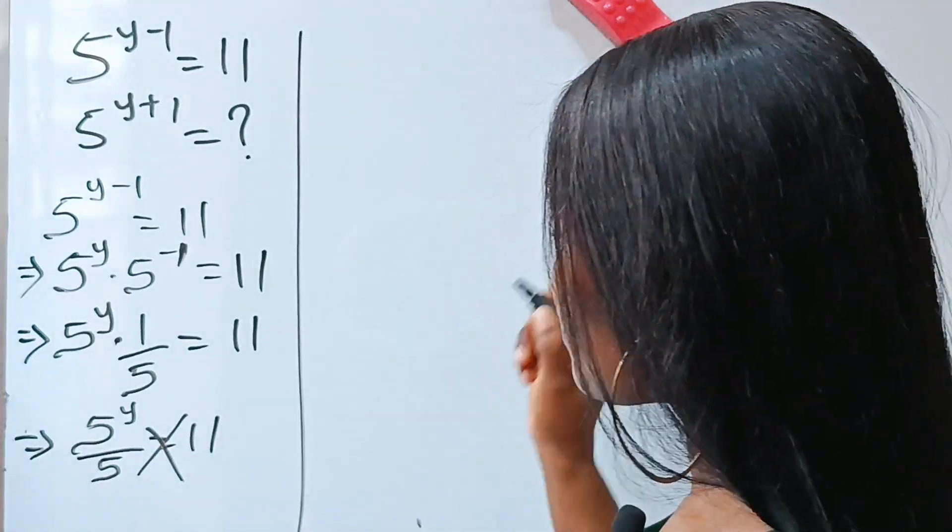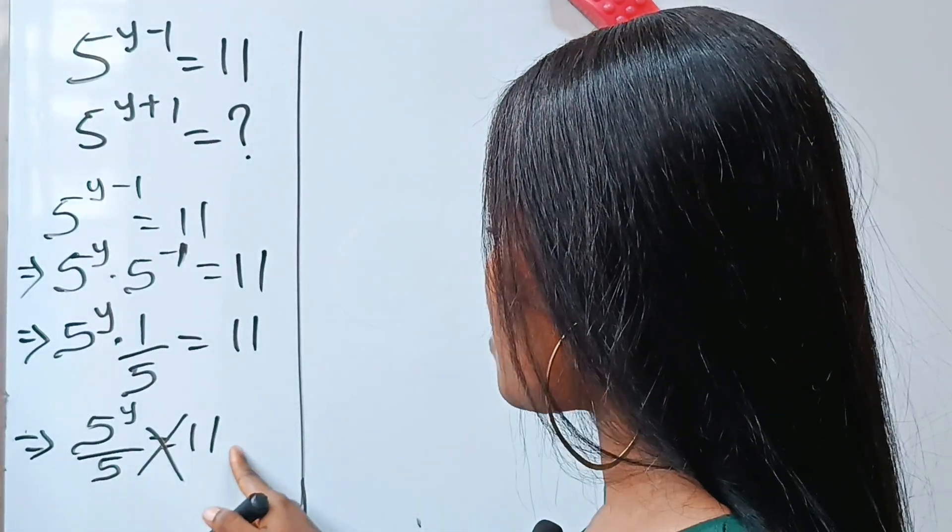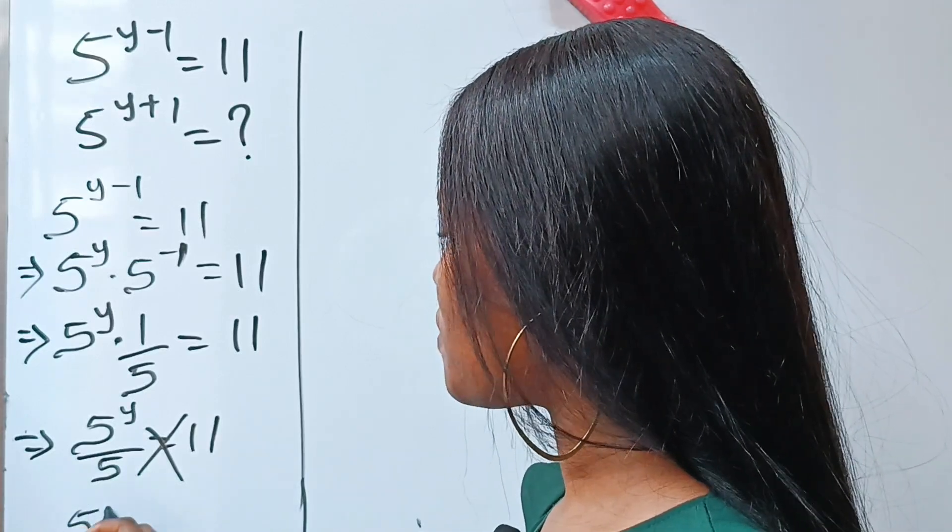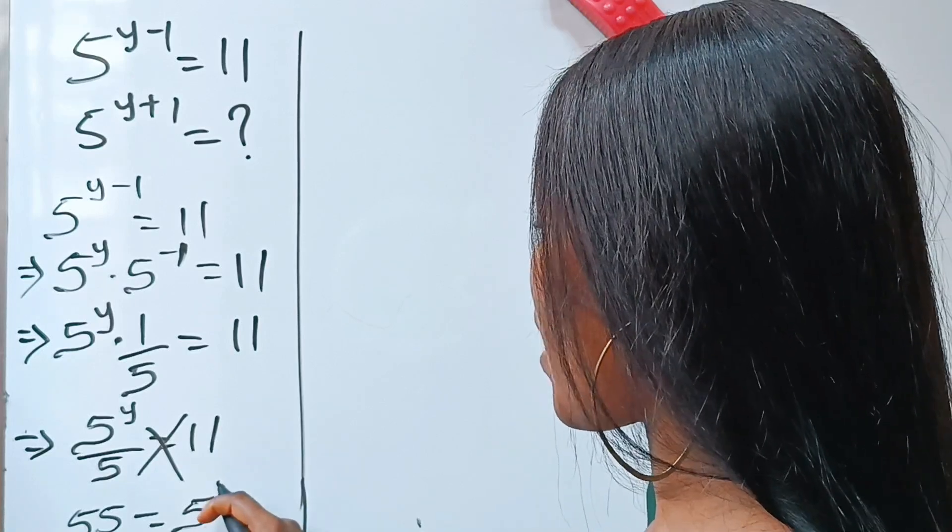Let's cross multiply. If we cross multiply, we are going to have that 5 times 11, which is 55, is equal to 5 to the power of y.